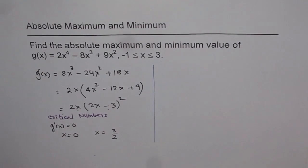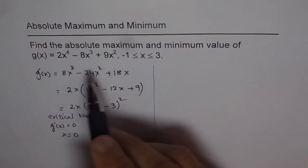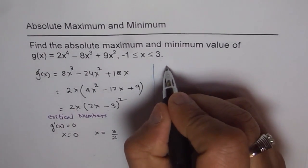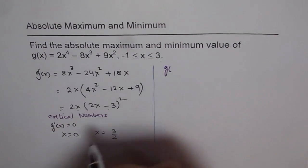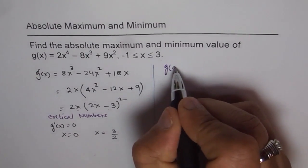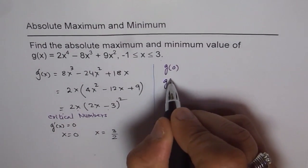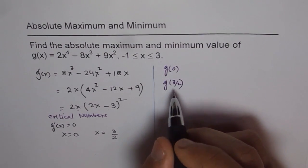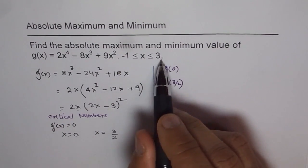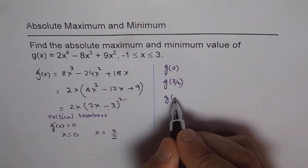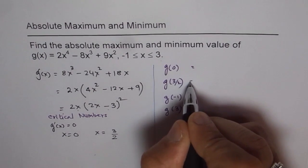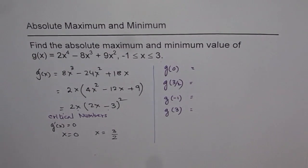Now that we have the critical numbers, we can find the absolute maximum and minimum. The criteria is: find the value of the function at the critical numbers, which are 0 and 3/2, and also find the value of the function at the endpoints of the closed interval, which are g(-1) and g(3). Use your calculator to find all these values.